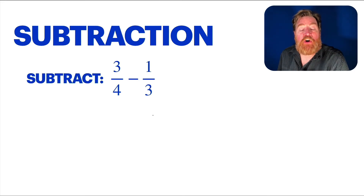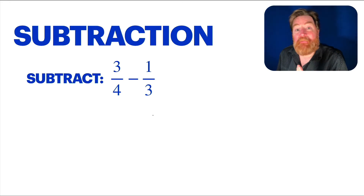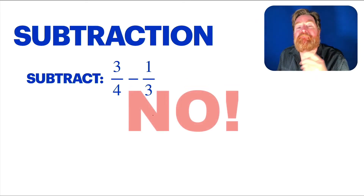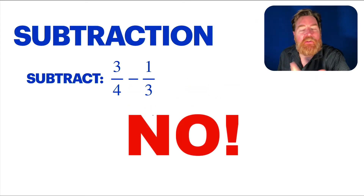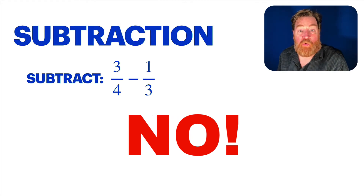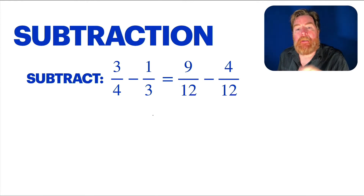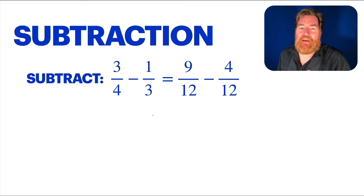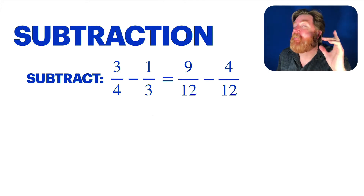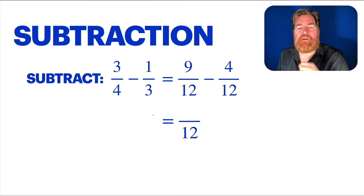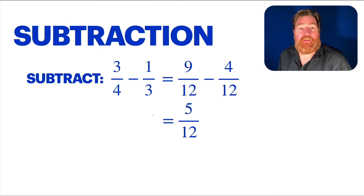Let's say we want to subtract three fourths minus one third. Can we subtract them? Are they the same things? Fourths and thirds — no. Well, we know what to do: we can convert fractions into the same things. So we won't take the time to do all the work, but we can convert them into twelfths. So three fourths minus one third can't be done as is, but nine twelfths minus four twelfths? Beautiful — twelfths and twelfths, we can subtract them and we're going to get twelfths. Nine minus four — that's five. Five twelfths. That's all there is to it.